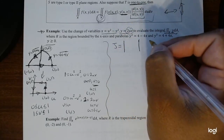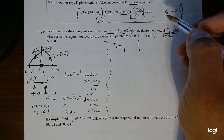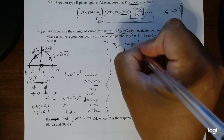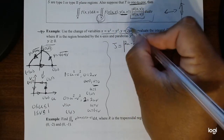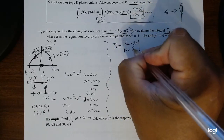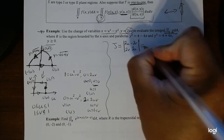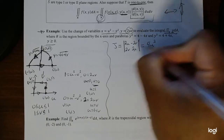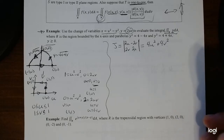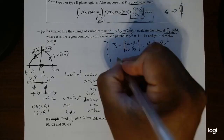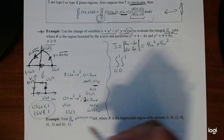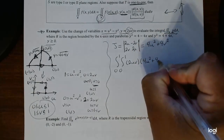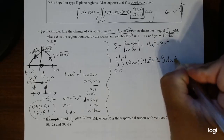Now we compute the Jacobian J. Using the definition: the derivative of x with respect to u is 2u, with respect to v is negative 2v; the derivative of y with respect to u is v, and with respect to v is u. Wait — let me recalculate. The Jacobian determinant gives us (2u)(u) minus (-2v)(v), which is 2u² plus 2v² — actually this is 4u² plus 4v².